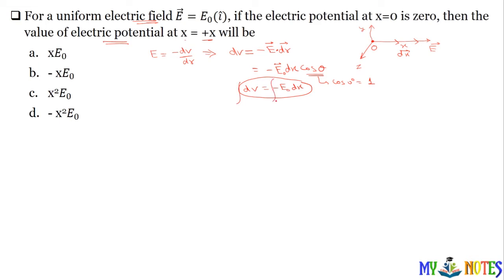Integrate karo 0 se x tak. Minus E₀ aur andar kya bachega dx. To minus E₀ into x — yeh ban gaya aapka x. So V equals minus E₀ x. This is the correct answer.